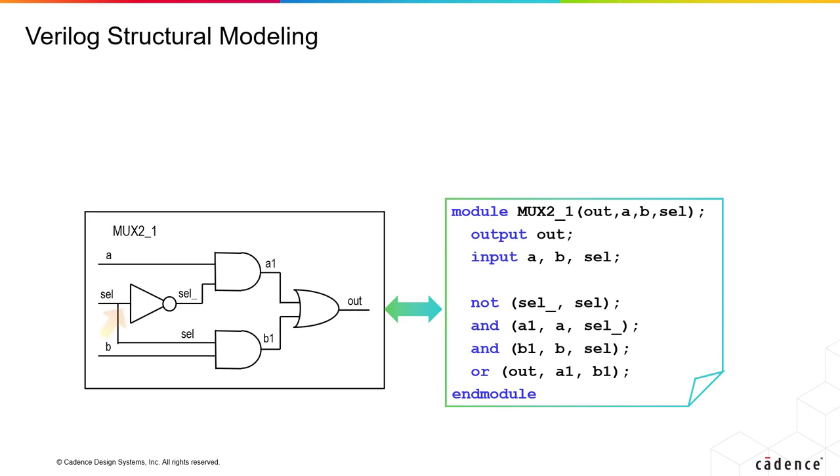So we can just say we want a NOT gate from the SELECT input that drives SELECT bar, and then we want an AND gate between A and SELECT bar that drives A1, then another AND gate that takes B and SELECT input that drives B1, and an OR gate that takes A1 and B1 and drives the output out.